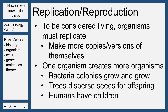A living thing also has to be able to replicate or reproduce. To be considered living, organisms must replicate — they must make more copies or versions of themselves. It doesn't always have to be perfect copies. One organism creates more organisms and that's how you reproduce. Bacteria colonies grow and grow; they do it asexually by cloning themselves. Trees disperse their seeds — you've seen acorns and maple helicopters that fall down — those are part of sexual reproduction between trees. And flowers and humans have offspring, we have children. Organisms must replicate or reproduce.